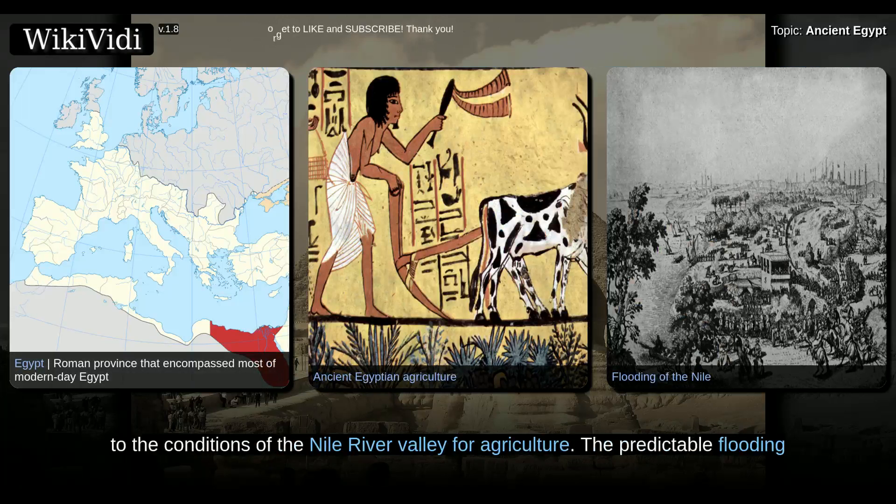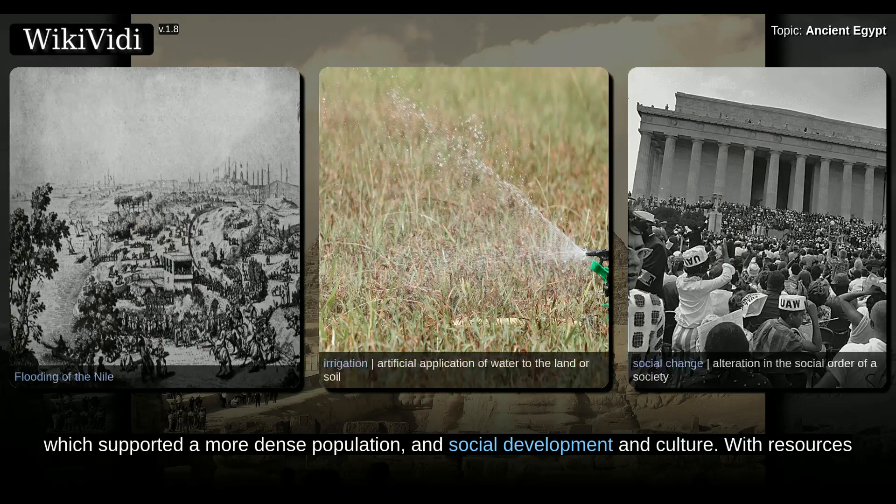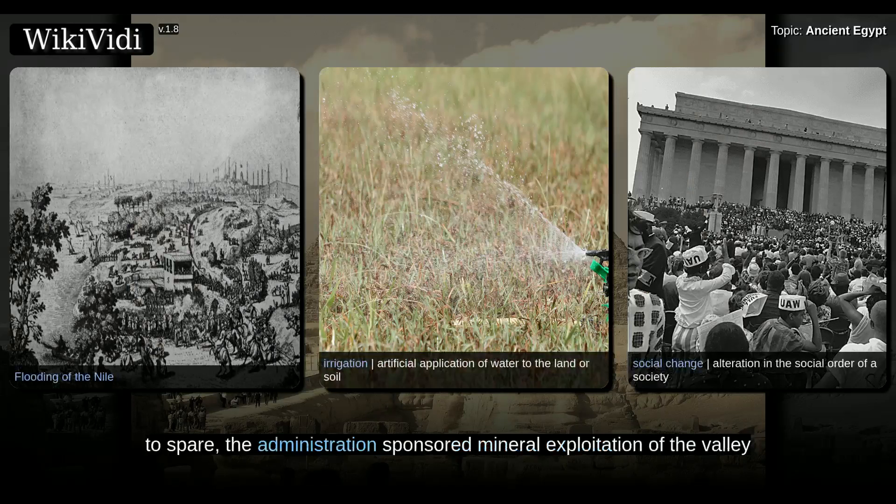The success of ancient Egyptian civilization came partly from its ability to adapt to the conditions of the Nile River Valley for agriculture. The predictable flooding and controlled irrigation of the fertile valley produced surplus crops, which supported a more dense population, and social development and culture, with resources to spare.